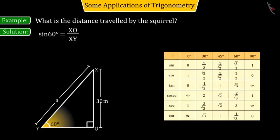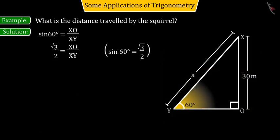On the left side, sine 60 degrees equals the square root of 3 divided by 2. On the right side, with the help of the given information, keeping the values of XO and XY as 30 and A respectively,